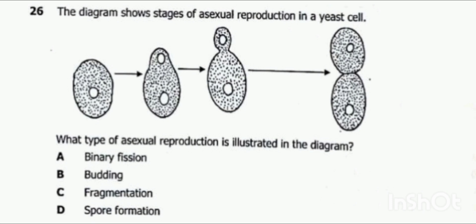So this parent cell has developed a bud — an outgrowth which we call a bud — and then it has started increasing in size, and at the last stage it detaches.